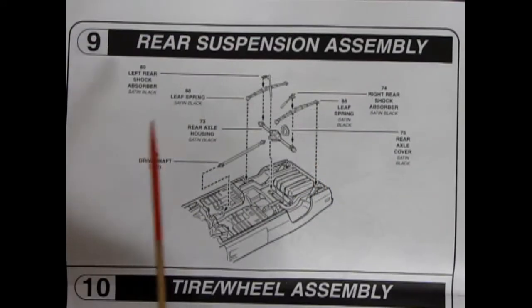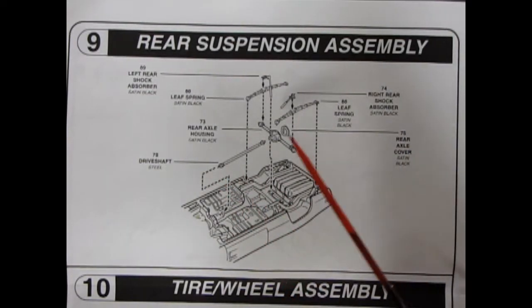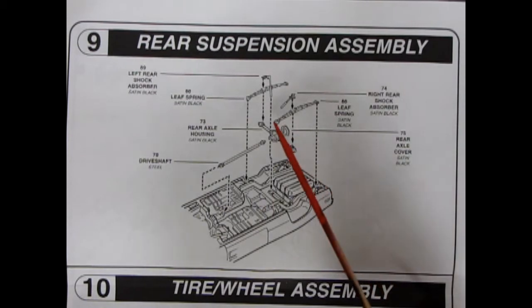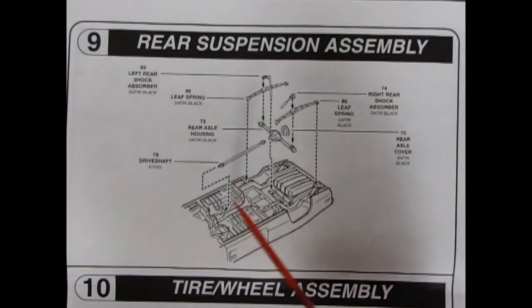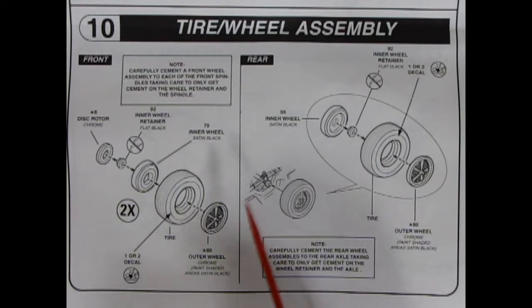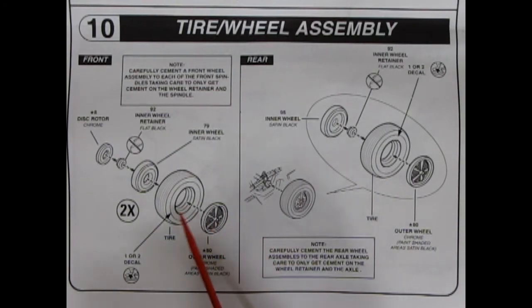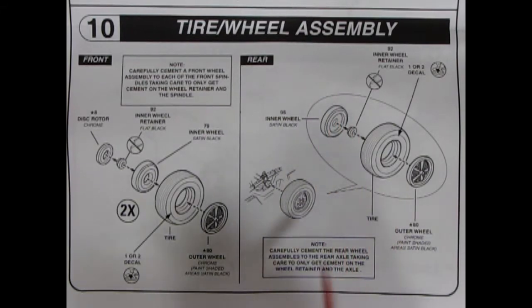Panel nine takes us to our rear suspension assembly and here you hook the drive shaft into the end of the transmission. You put in your Dana rear axle with the cover, the leaf springs drop in and the shock absorbers and the tops of the leaf springs all hook up underneath here in the back of the chassis. Our tire wheel assembly is the Chrysler version of the Magnum 500s. They pop into our tires and then that goes onto an inner wheel. There is a wheel retainer and a disc rotor for the front and in the back it's a little more simplified. Outer wheel, tire, retainer and the inner wheel. These would be drums on the back.